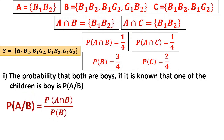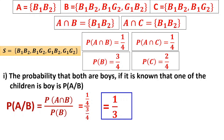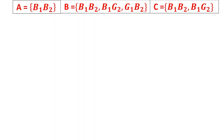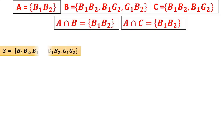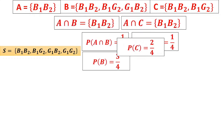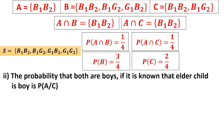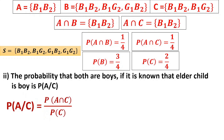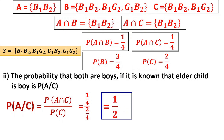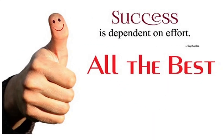Subdivision (i): P(A|B) = P(A∩B) / P(B) = (1/4) / (3/4) = 1/3. Subdivision (ii): P(A|C) = P(A∩C) / P(C) = (1/4) / (2/4) = 1/2. In this problem we identified the sample space, event spaces, and probabilities of each event separately, then applied the conditional probability formula. Success is dependent on efforts — all the best!